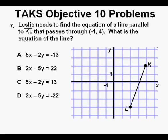Problem 7. Leslie needs to find the equation of the line parallel to line segment KL that passes through (-1, 4). What is the equation of the line? We need to look at two things here. First, there is the slope of the line between the points. The rise is 5, and the run is 2, so this will be a slope of 5 over 2, or 2.5. So we know that the parallel line will have this slope also. And we also know that the line will go through this point, (-1, 4).